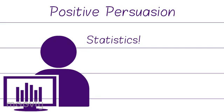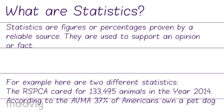Hi everyone and welcome to Positive Persuasion. Today we're going to be looking at statistics — what statistics are and how statistics can be used in a persuasive piece. Statistics are figures or percentages proven by a reliable source. They are used to support an opinion or fact.